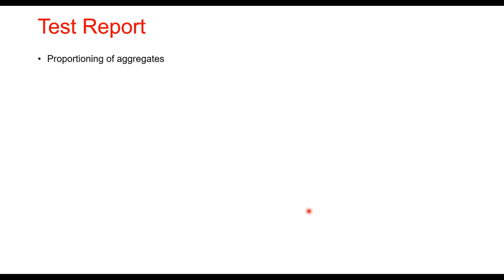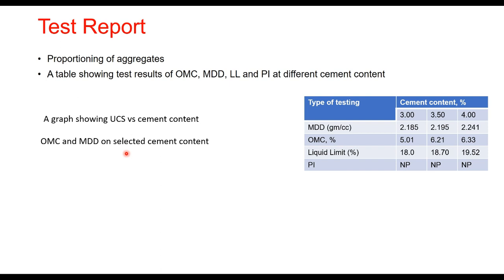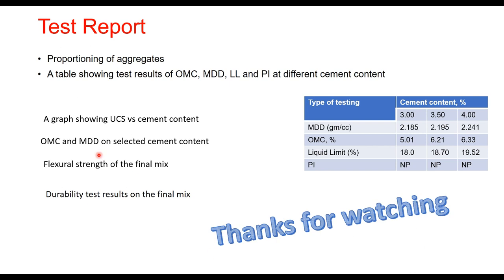Finally, the test report will consist of: the proportioning of aggregates; a table showing OMC, maximum dry density, liquid limit, and plasticity index at different cement contents; a graph of UCS versus cement content; OMC and maximum dry density at the selected cement content; flexural strength of the final mix at selected cement content; and durability test results on the final mix. Thanks for watching — you can write your comments and suggestions in the comment box.